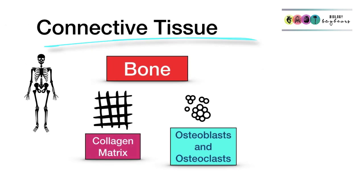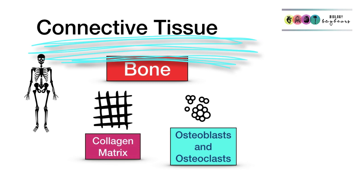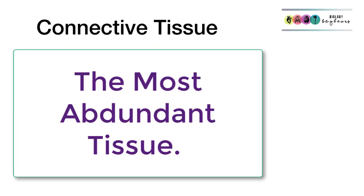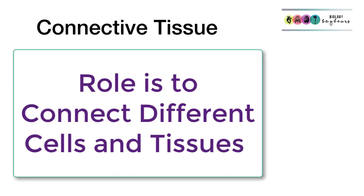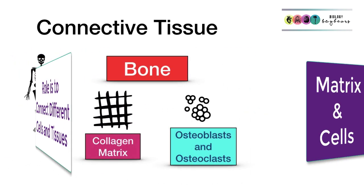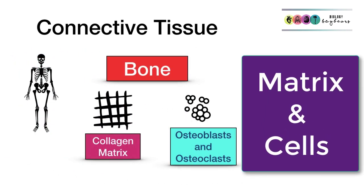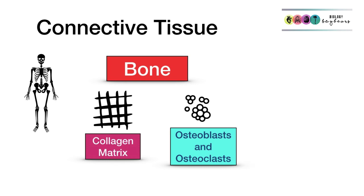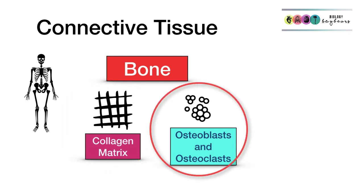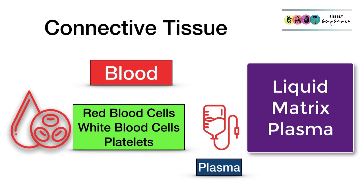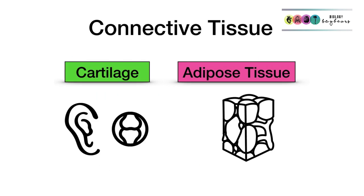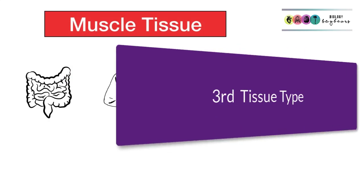The next type of tissue is connective tissue. There are many different varieties, it's found everywhere, and it's the most abundant of the animal tissues. Its role is to connect different cells and tissues together — it's the glue that binds everything. A key feature is that there must be a matrix and different cells. Examples include bone, which has a collagen matrix with osteoblasts and osteoclasts, and blood, which has a liquid matrix called plasma with blood cells suspended in it.